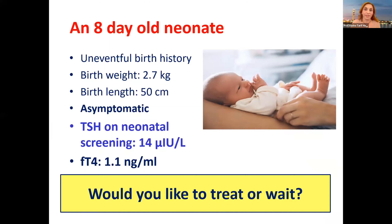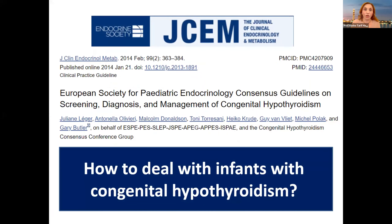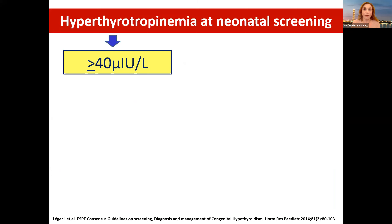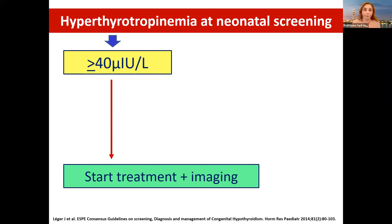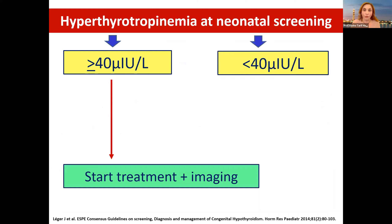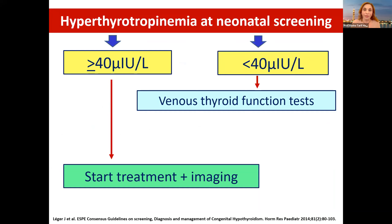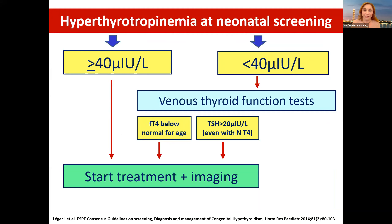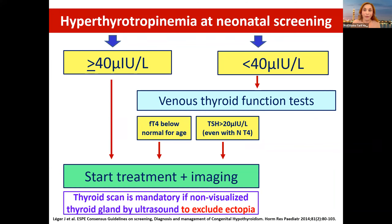This is based on the European Society for Pediatric Endocrinology (ESPE) consensus guidelines on congenital hypothyroidism: if TSH is above 40, start treatment and do imaging. If less than 40, take a venous thyroid function test and treat only if T4 is below normal or TSH is above 20. Anytime you cannot see the thyroid gland by ultrasound, do a thyroid scan to exclude ectopia.